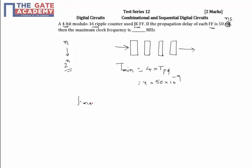Maximum frequency is nothing but 1 by t_minimum. So this equals 1 divided by 4 × 50 × 10^-9, which equals 10^9 divided by 200. I'll write this as 10^6 × 10^3.